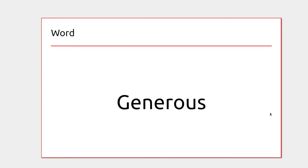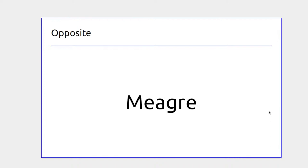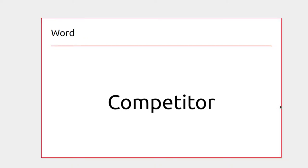Someone who tips generously or puts a lot of money into the church offering plate relative to what they earn would be generous, and someone who puts very little in compared to what they earn is meager.